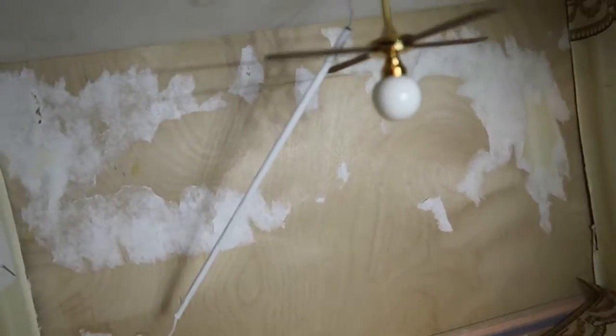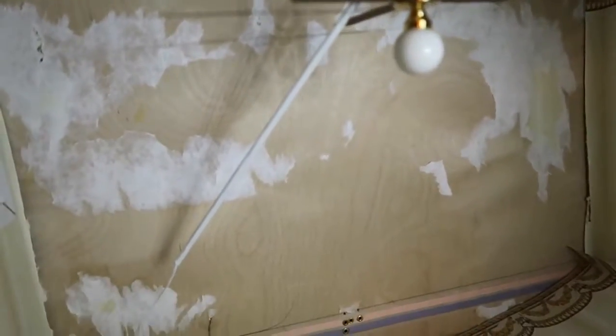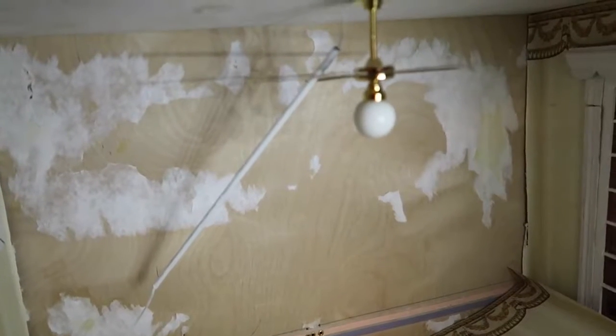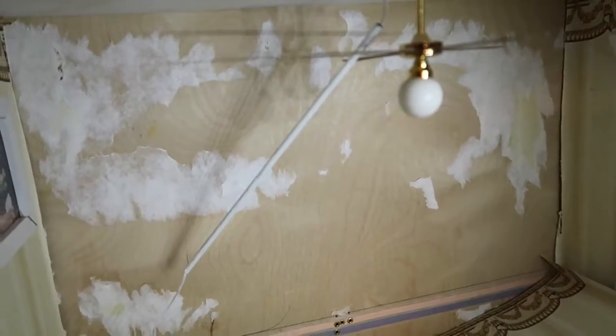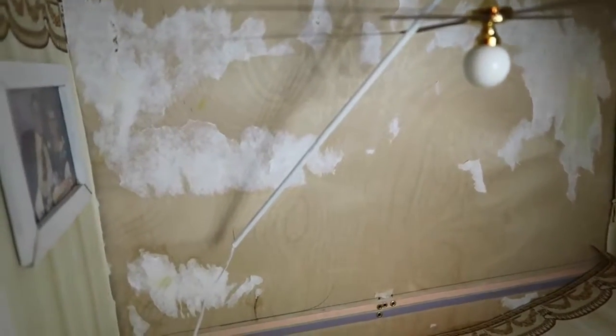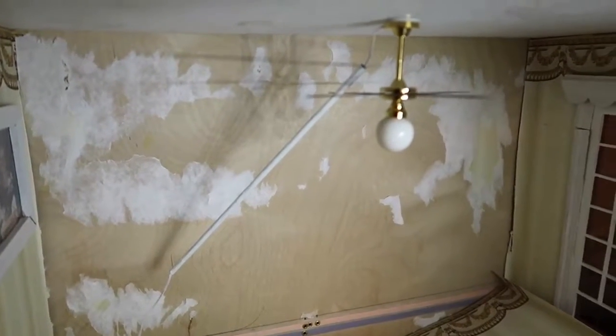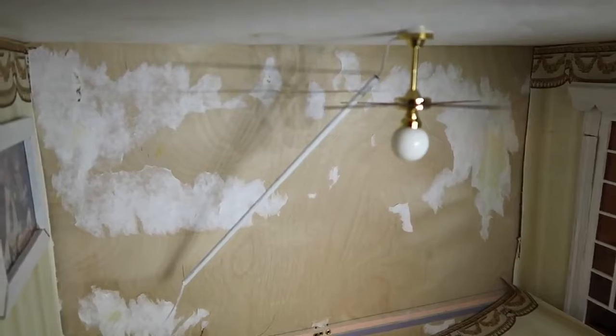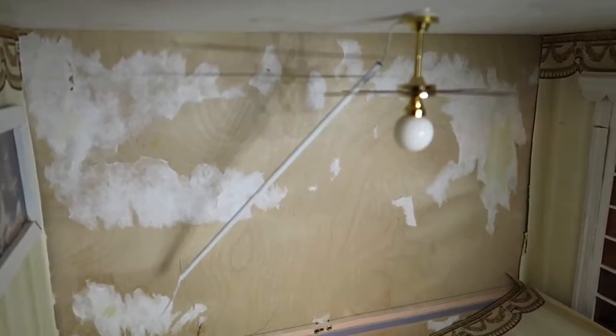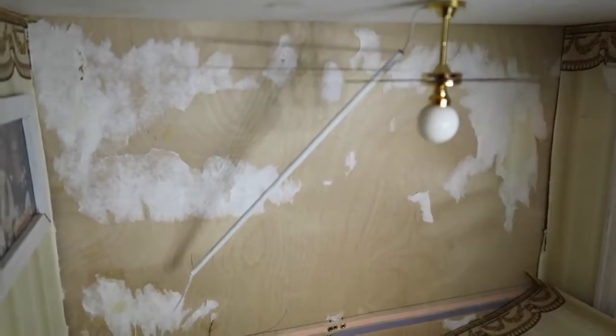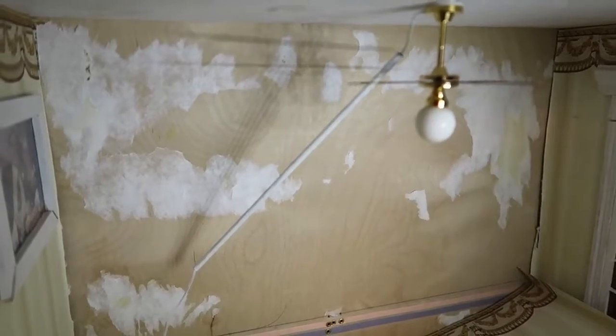That will glue to the ceiling so that it stays nice and tight to the ceiling. And then we'll add a second piece to run down the corner once the wallpaper is done. That'll just make the wiring look a little neater.